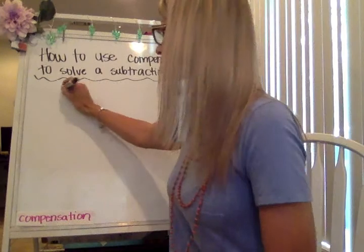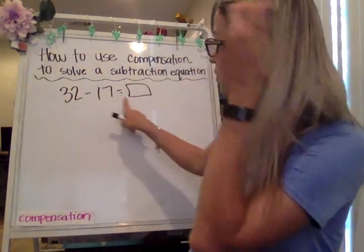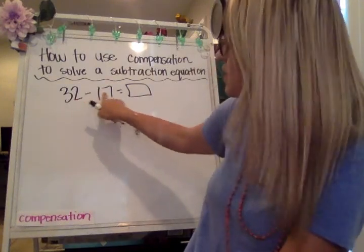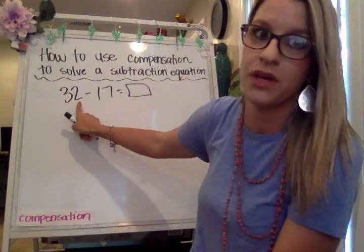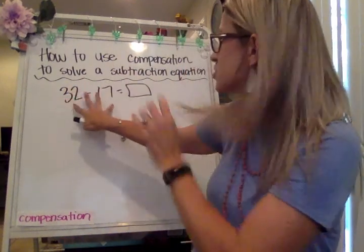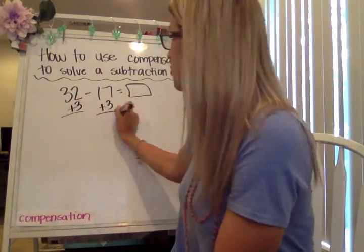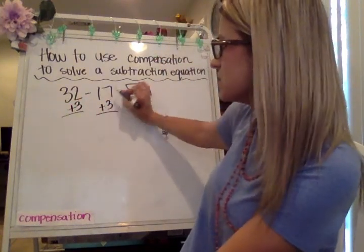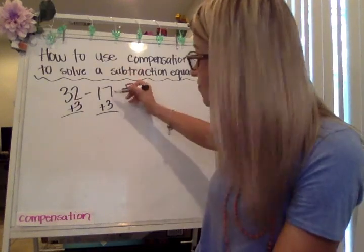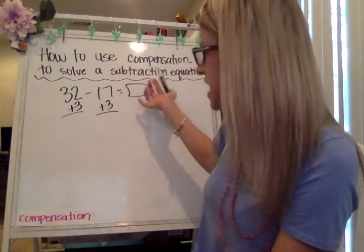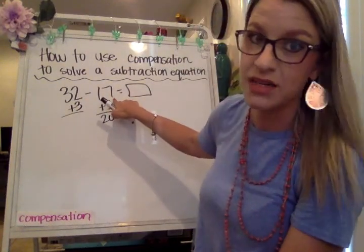32 minus 17 is the first problem we're going to start with. Notice that this is a regrouping equation because you have to take away seven from the ones place, but there are only two in the ones place. So using compensation, we're going to add three on both sides. The reason we're adding three is because three partners up with seven — they're compatible numbers — and that gets it to the next 10. It's easier to subtract 20 than it is to subtract 17.